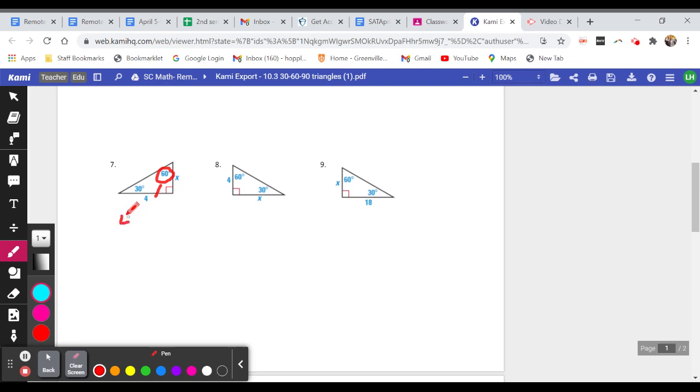So that means that four equals x times the root of three, because that's the relationship of this side. So I'm looking for x because that is the shortest side. So in order to get x by itself, I need to divide both sides by root three.